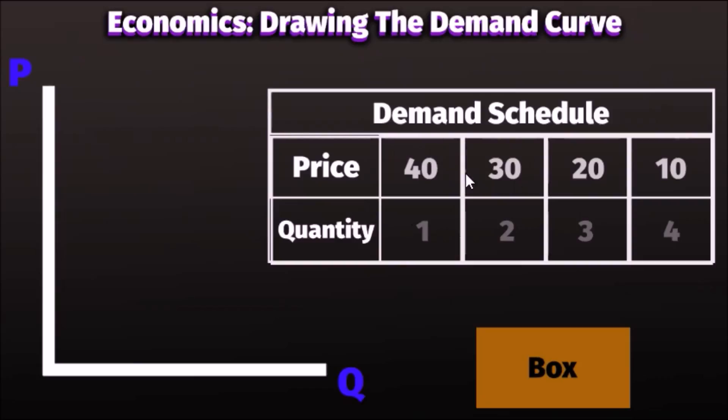So let's go and populate this table with data. We can see at a price of $40 we'll demand one box. At 30 we'll demand 2, at 20, 3, and then at 10, 4.